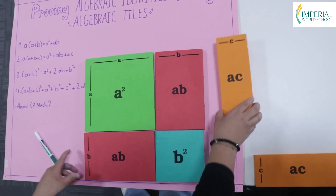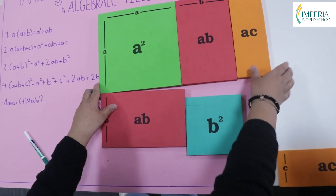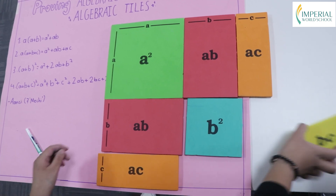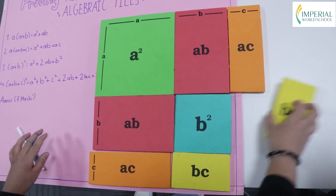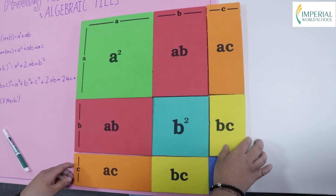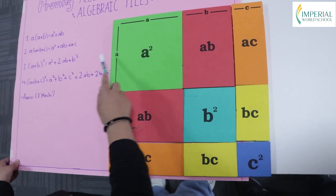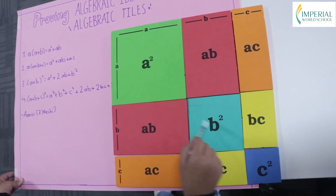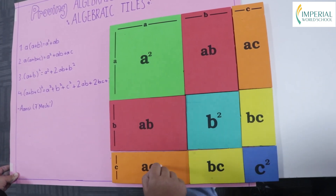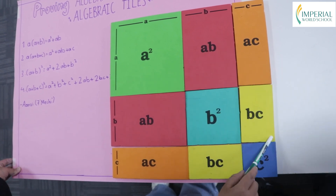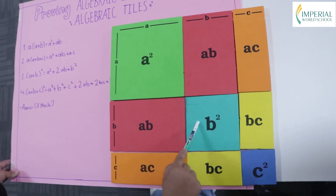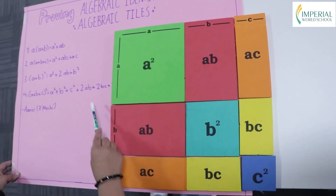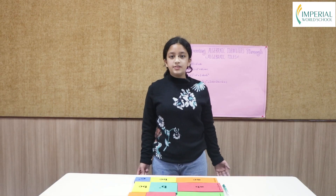Now let's find (a + b + c) whole square. For this we add c to make the length and breadth equal: both are a + b + c. Multiplying: a×a = a², a×b = ab, a×c = ac, b×a = ab, b×b = b², b×c = bc, c×c = c². So (a + b + c)² = a² + b² + c² + 2ab + 2bc + 2ac. We have now found all the algebraic identities using algebraic tiles.